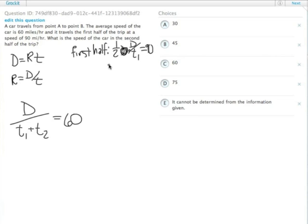We multiply both sides by two to get rid of the half. D over T1 equals 180. So T1 equals D over 180. That's handy because then we can plug that into this original equation and solve for T2. This is where I don't really like this problem.